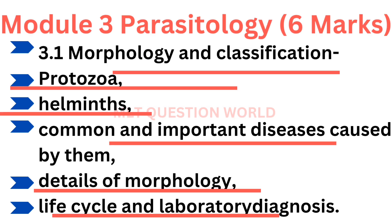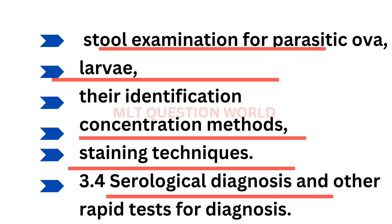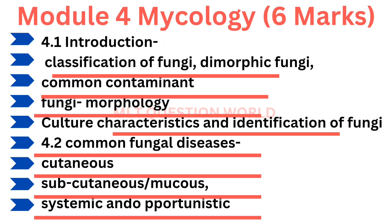Module 3 is parasitology — morphology and classification of protozoa, helminths, common and important diseases caused by them, details of morphology, life cycle, and lab diagnosis. Then clinical parasitology: collection of specimens, transportation and storage, processing of specimens, blood smear, thin and thick smear, then microfilaria. Then stool examination for parasitic ova and larvae, their identification, concentration methods, staining techniques, serological diagnosis, and other rapid testing methods.